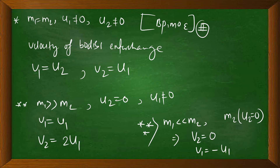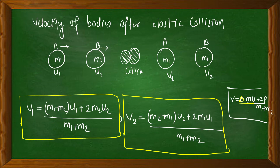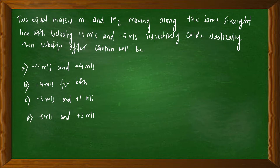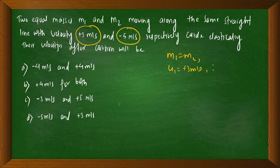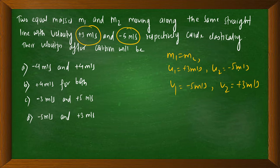Example: Two objects moving in the same direction — velocity U1 equals plus 3 meters per second and U2 equals minus 5 meters per second — collide elastically. Find the velocity after collision. Since masses are equal, velocities exchange. So V1 equals minus 5 meters per second and V2 equals plus 3 meters per second. The answer is D.